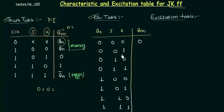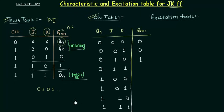When J is 0 and K is 1, we are going to have Qn+1 equal to 0. When J is 1 and K is 0, Qn+1 is 1. And when J is 1 and K is 1, this is the special toggle case reduced from SR flip-flop. Whatever the value of Qn, we get the complement of it. Since Qn is 0, the complement is 1, so Qn+1 is 1.